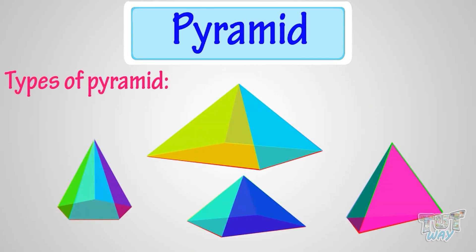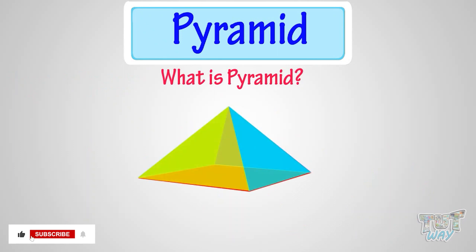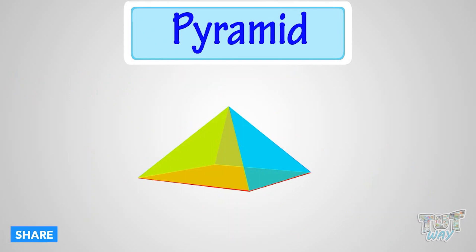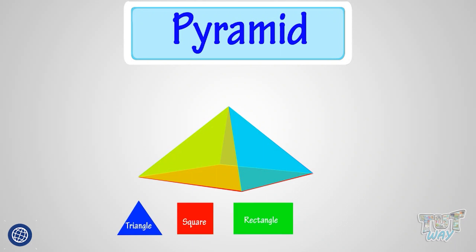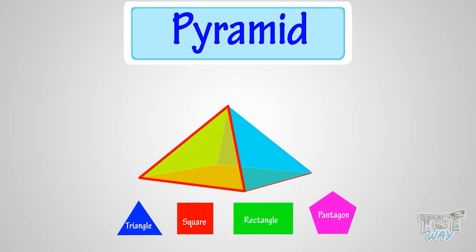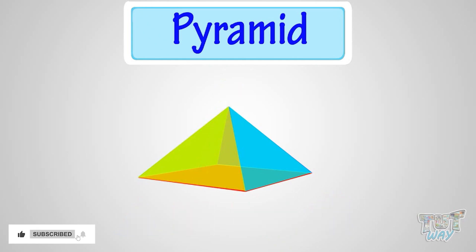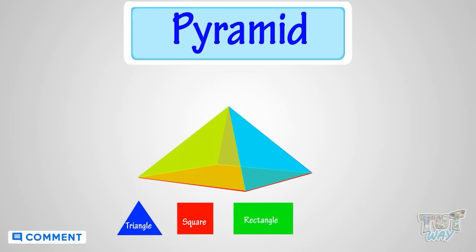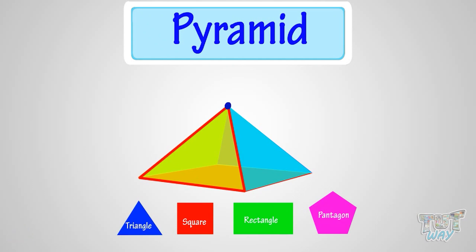Let's see what a pyramid is. In simplest words, a pyramid is a 3D shape that has a single base, which can be of any polygon shape like triangle, square, rectangle, or pentagon, and all other faces are triangle in shape that converge to a single point at the top, which is called its apex.